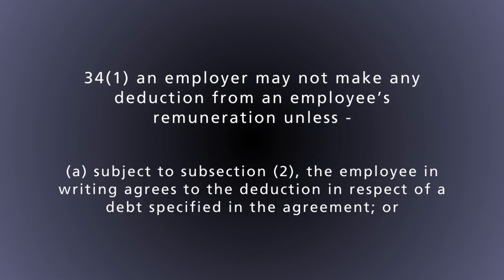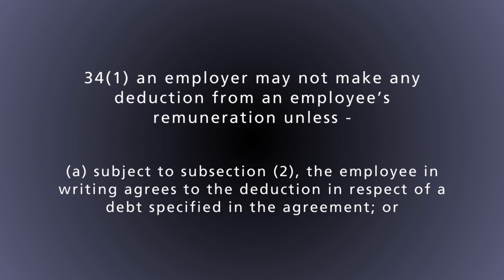Section 34(1)(a), subject to subsection 2, states: the employee in writing agrees to the deduction in respect of a debt specified in the agreement. Deductions need to be in writing. When labor legislation says there needs to be an agreement, if it is not specified that it needs to be written then a verbal agreement is sufficient — but specifically this clause requires a written agreement, meaning it must be on paper and signed by both parties or their representatives.